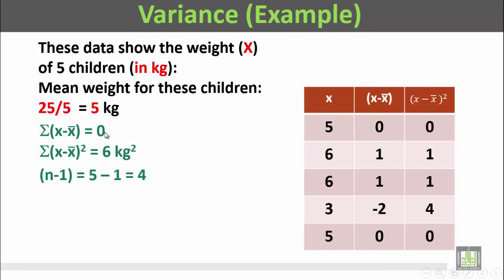Now we compute Σ(x minus x̄) squared by squaring each deviation: 0 squared = 0, 1 squared = 1, 1 squared = 1, (−2) squared = 4, 0 squared = 0. Adding all these values: 0 + 1 + 1 + 4 + 0 = 6. So Σ(x minus x̄) squared is 6 kilograms squared.